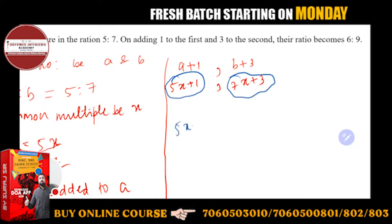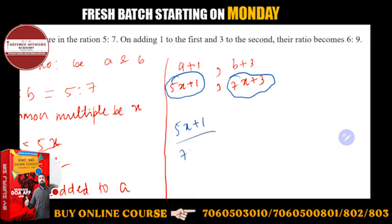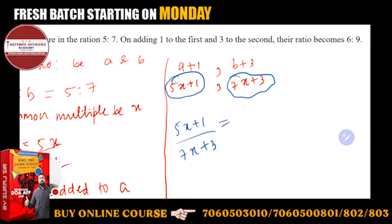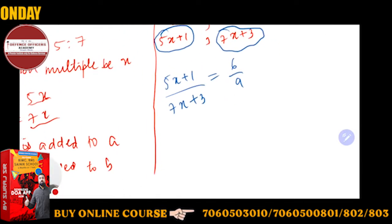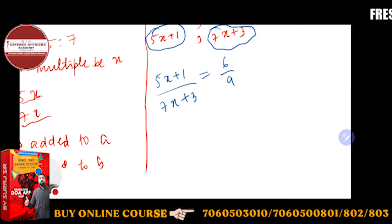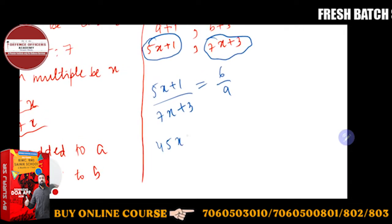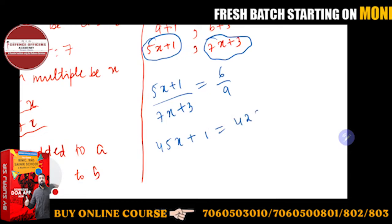Now the ratio is 5x plus 1 upon 7x plus 3, which equals 6 upon 9. Now what you will do, you will do the cross multiplication. So 9 times 5 is 45, so 45x plus 9 is equal to 7 times 6 is 42, so 42x plus 18.